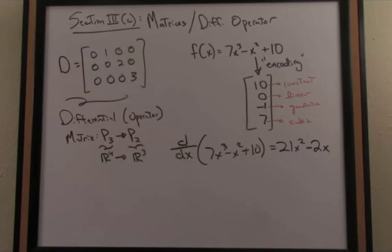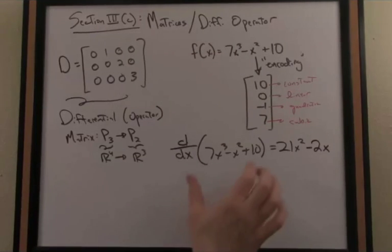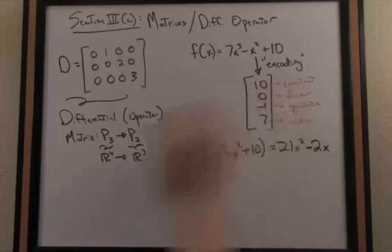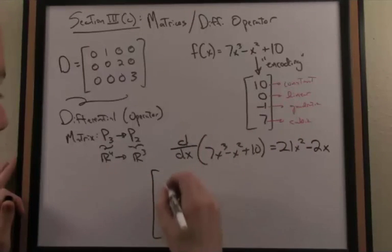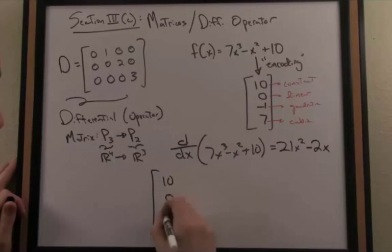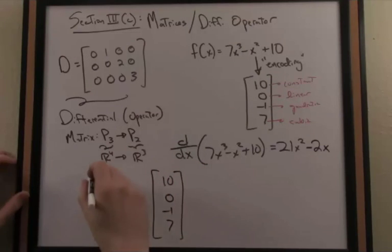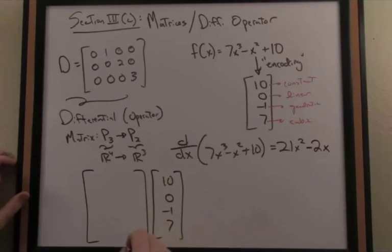So now, in a similar fashion, let's differentiate using a different mathematical representation, namely matrix multiplication. I take the encoded version of my polynomial, which we have from before as 10, 0, -1, 7, and I want to differentiate it, so I multiply it by my differential matrix. 0, 1, 0, 0, 0, 0, 0, 2, 0, 0, 0, 3.